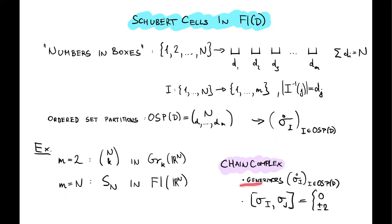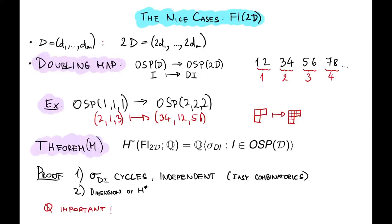The generators of the chain complex are known, and the incidence coefficients turn out to be zero or plus or minus two, depending on the combinatorics of these ordered set partitions. The additive structure of the cohomology has a nice description in the so-called even cases, meaning you take a sequence of integers and double each one.